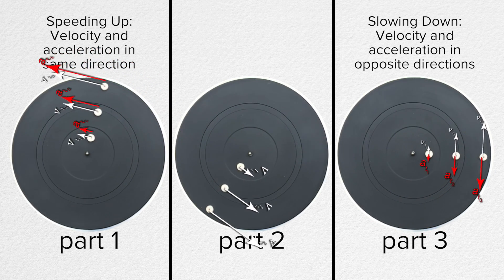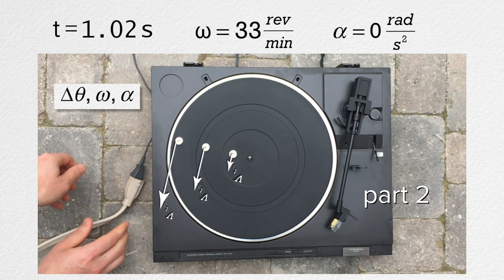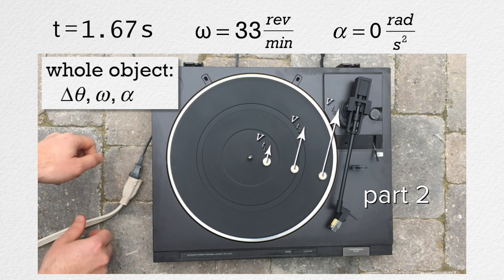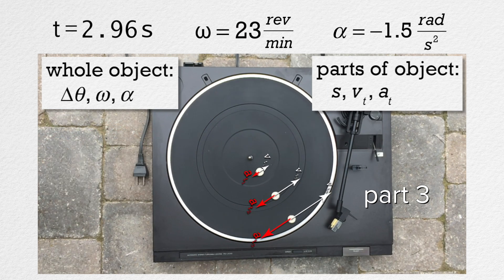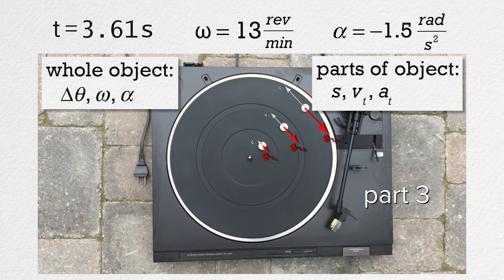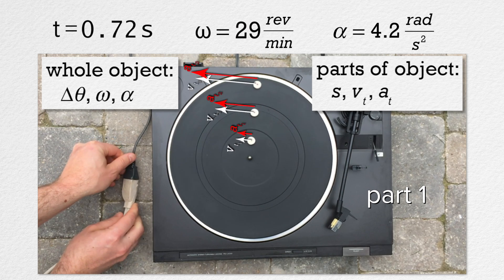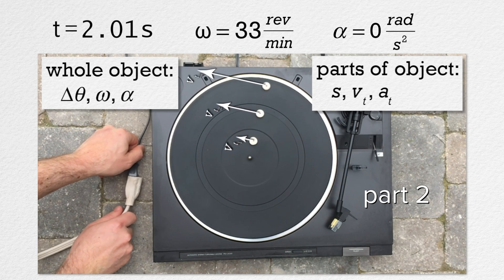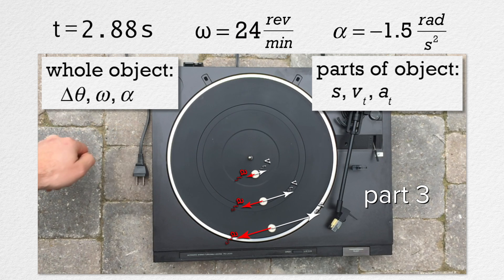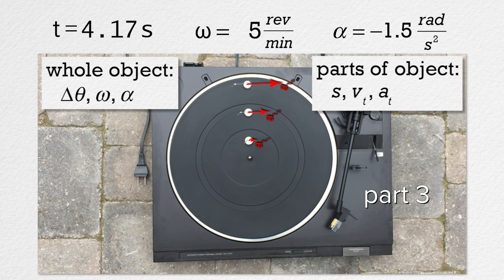Now let's go back to just one turntable. Please be aware that angular displacement, angular velocity, and angular acceleration refer to the whole object, whereas arc length, tangential velocity, and tangential acceleration refer to specific parts of, or locations on, an object. This is why we can describe the angular velocity of the whole turntable; however, when we refer to tangential velocity, we have to refer to the tangential velocity of a specific point on the object. We cannot say the tangential velocity of the whole turntable equals any specific value, because the whole turntable does not have a specific tangential velocity. Only specific radii on the turntable have specific tangential velocities.